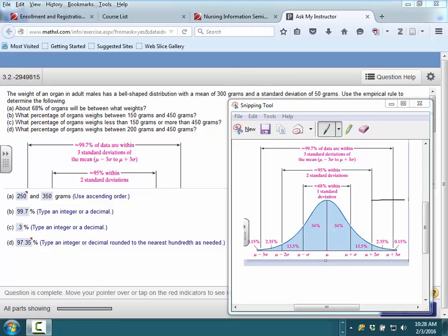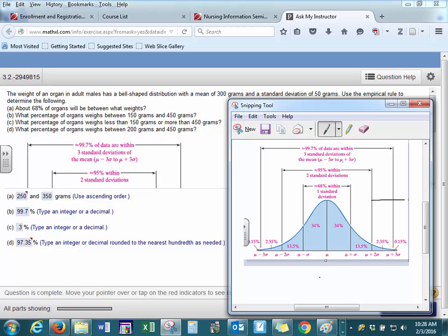So the first thing we should do with our Empirical Rule chart is place 300 in the center because that is our mean.